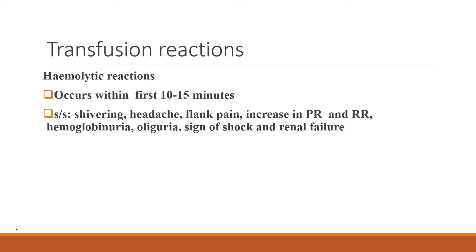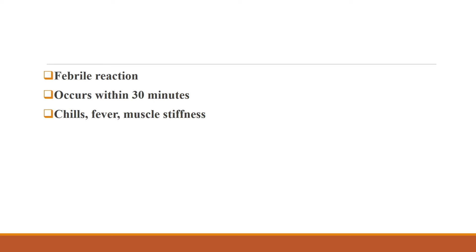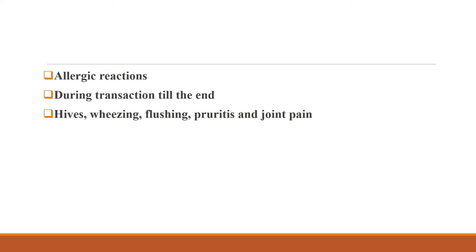There are mainly three types of transfusion reactions: allergic, febrile, and hemolytic reactions. Hemolytic reactions occur within the first 10–15 minutes and include shivering, headache, flank pain, increased pulse and respiratory rate, hemoglobinuria, oliguria, signs of shock, and renal failure. Febrile reactions occur within 30 minutes and include chills, fever, and muscle stiffness. Allergic reactions can occur during the transfusion until the end and include hives, wheezing, flushing, pruritus, and joint pain.